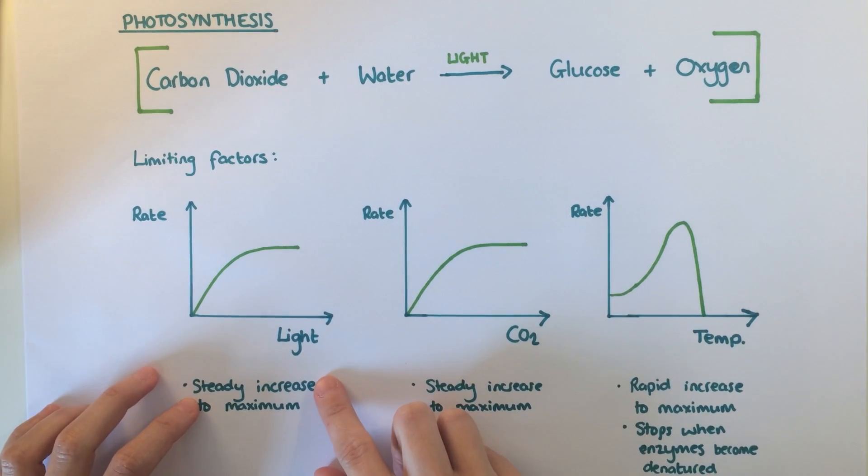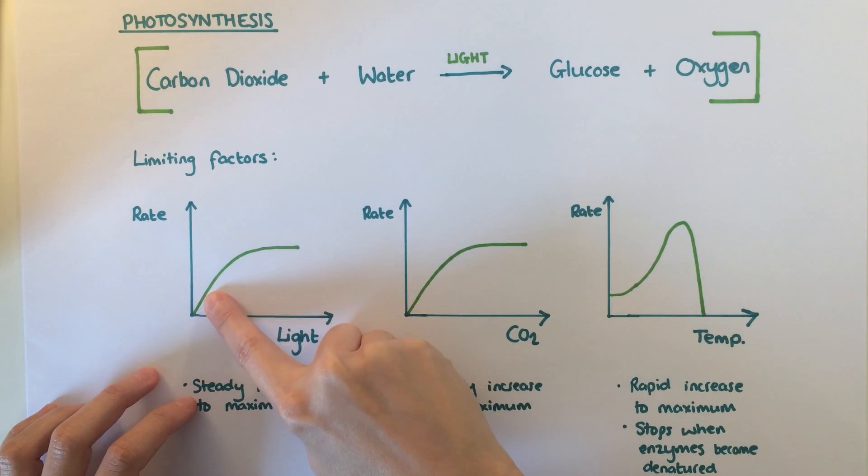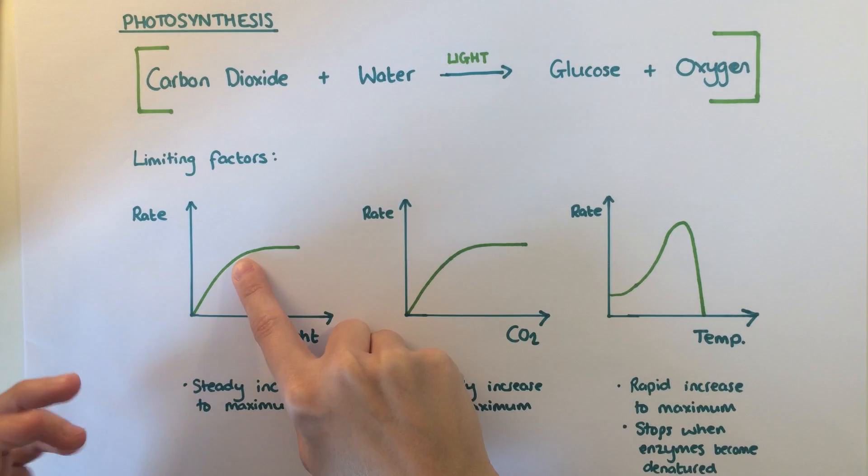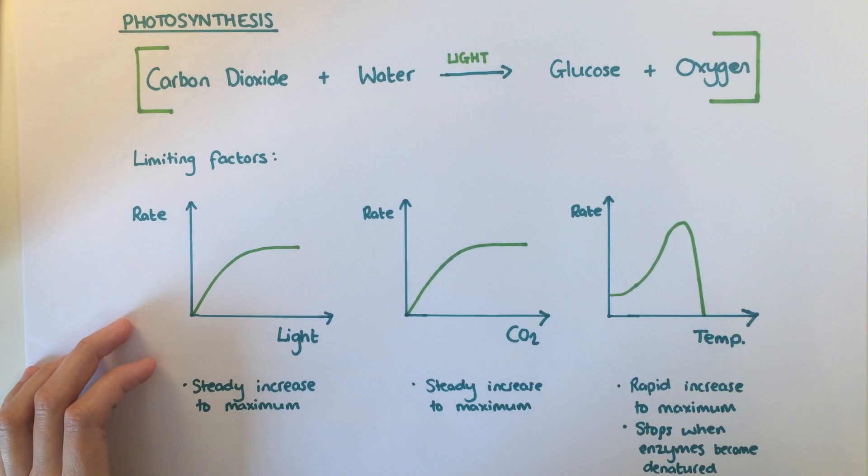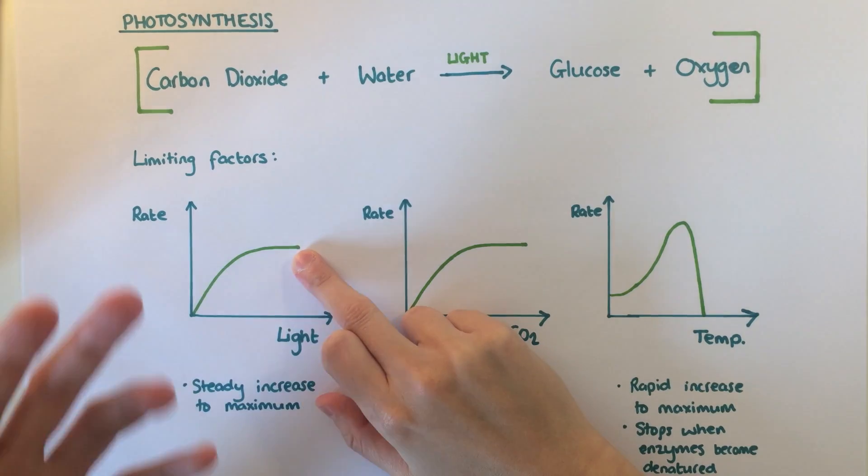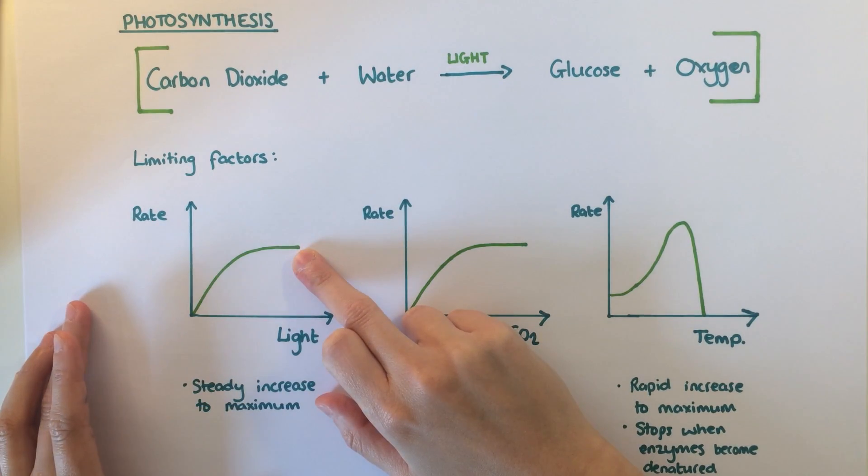Firstly, light. As the amount of light increases, the rate of photosynthesis increases. This only happens up until a certain point. At this point, the amount of photosynthesis would actually be limited by something else, such as lack of carbon dioxide.